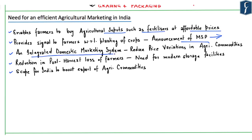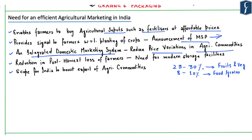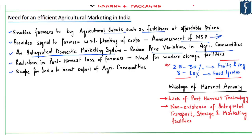An integrated domestic marketing system would considerably reduce price variations of agricultural commodities, enabling farmers to sell their produce anywhere in India. A High Level Export Committee constituted by the Ministry of Agriculture estimated that around 25–30 percent of fruits and vegetables and around 8–10 percent of food grains get wasted due to inadequate storage facilities. Additionally, food grains are wasted annually due to lack of post-harvest technology and non-existence of integrated transport, storage, and marketing facilities. Effective marketing infrastructure would reduce post-harvest losses and improve farm income.